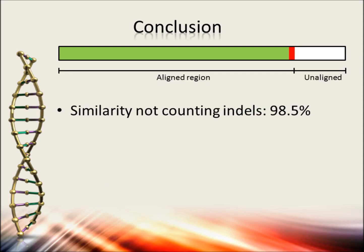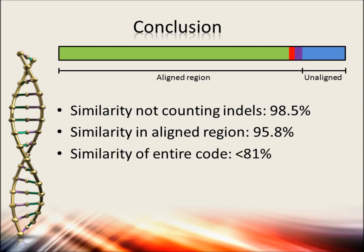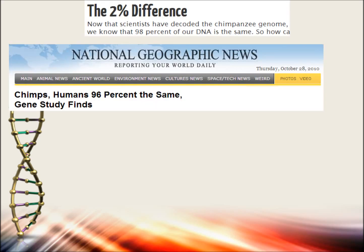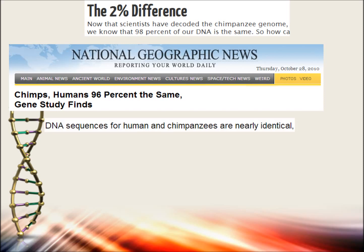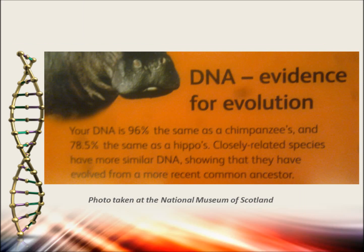Conclusion: excluding indels, the similarity is about 98.5%. Excluding unalignable data, the similarity is about 95.8%. In reality, the similarity is less than 81%. So the next time you see claims that we have 99% or 96% DNA similarity — even told by very reliable sources like National Geographic or in your local museum — you know what it means.